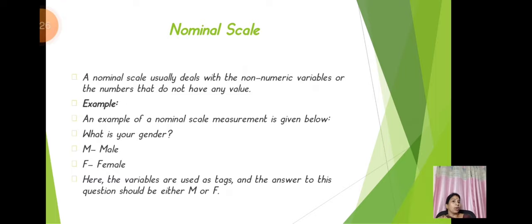A nominal scale is a non-numeric variable or a number that does not have any value. An example of a nominal scale measurement is: 'What is your gender? Male or Female.' Here the variables are used as tags and the answer to this question should be either M or F.